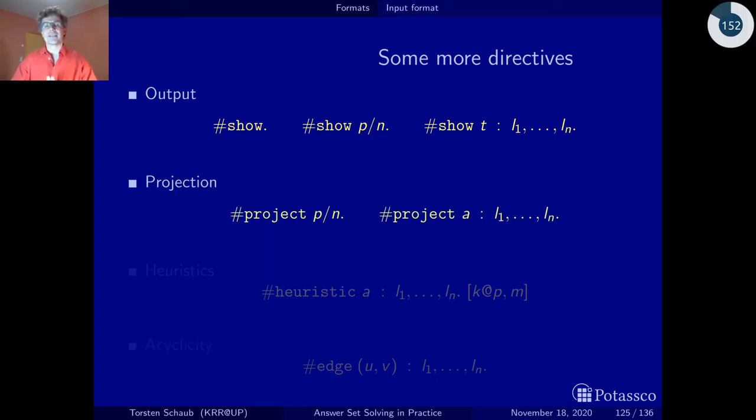Projection may be a bit technical and tells the solver not only which atoms to show, but also, when it enumerates, to make a projection on the solution. If a solution was found with the atoms you delineate here with the projection, it will not look for a second solution which coincides on this set of atoms—like a projection in databases. This is for when you want to enumerate answer sets and only confine them to a subset of the alphabet.